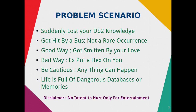There are two ways you can lose your DB2 knowledge. One is a good way and another one is a bad way. The good way is you got smitten by your love. The bad way is your scornful ex put a hex on you — a magical spell, like voodoo stuff or some kind of black magic. You can lose your DB2 knowledge. Be cautious, anything can happen.